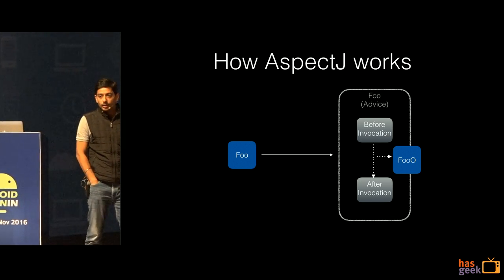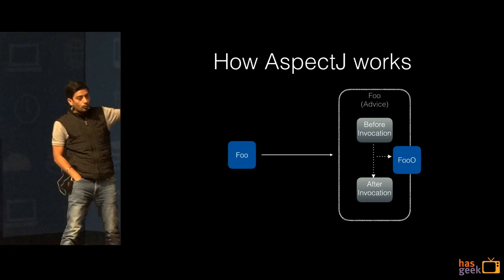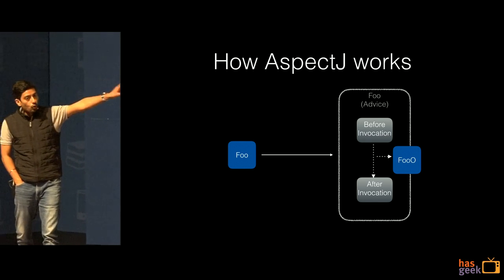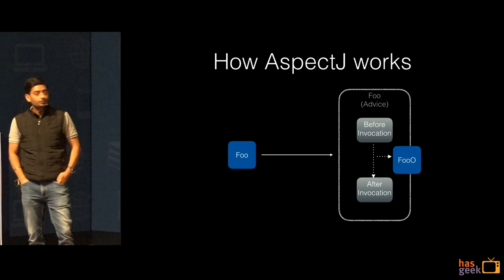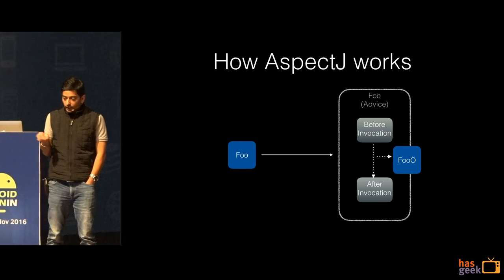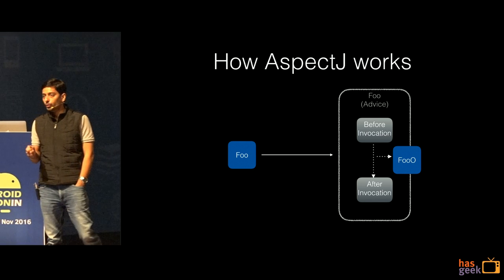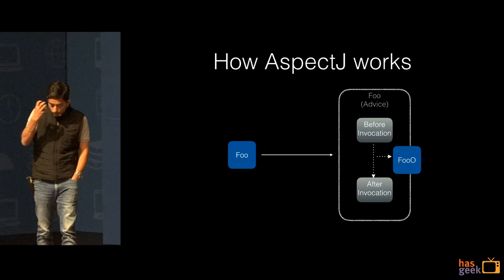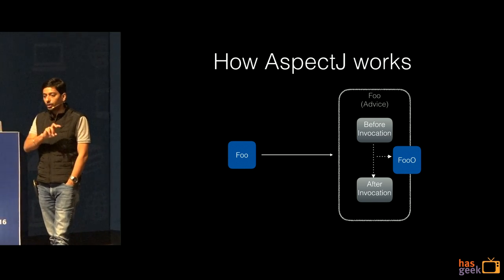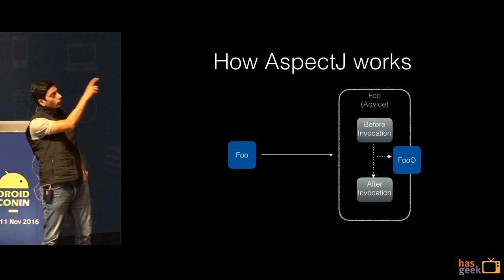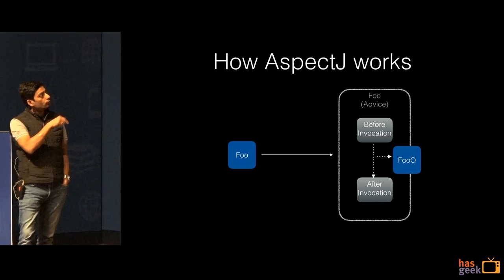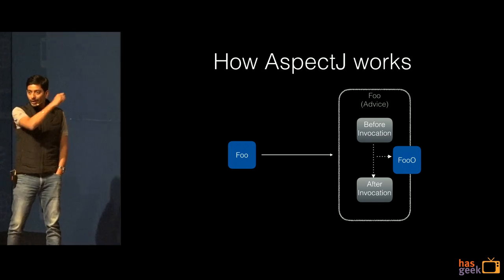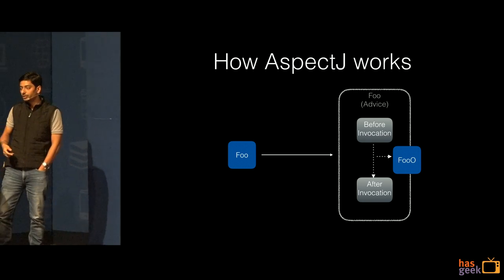This is how AspectJ works. You have a function foo — it gets converted into foo-original. Then another counterpart function called foo gets created. Throughout your code you must be calling foo; instead, the new function will now get called. Inside the new function you may choose when to call your original function. We'll get to know more about this when we see the code.